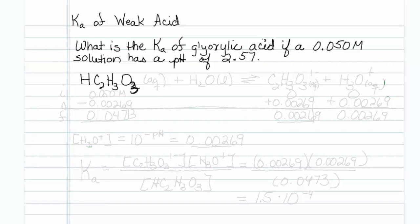We are trying to find the Ka, so let's write the definition Ka reaction. Glyoxic acid plus water is in equilibrium with the conjugate base and hydronium. Both of these are in the aqueous state.